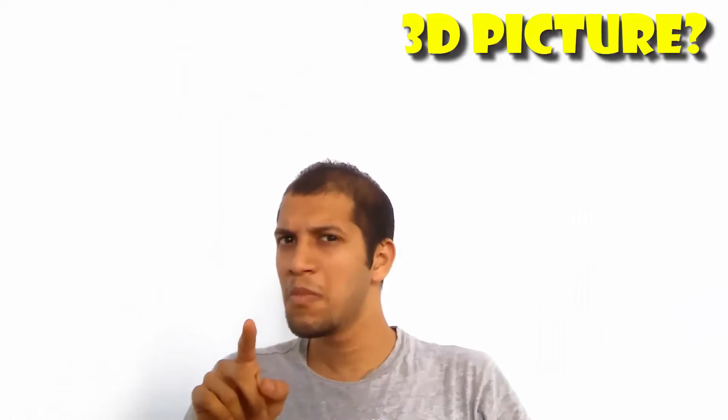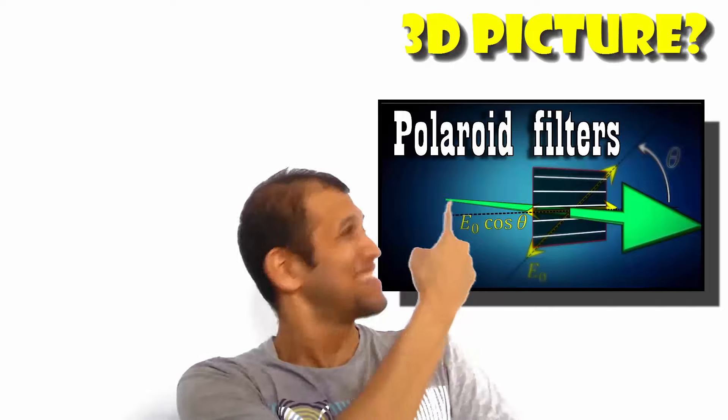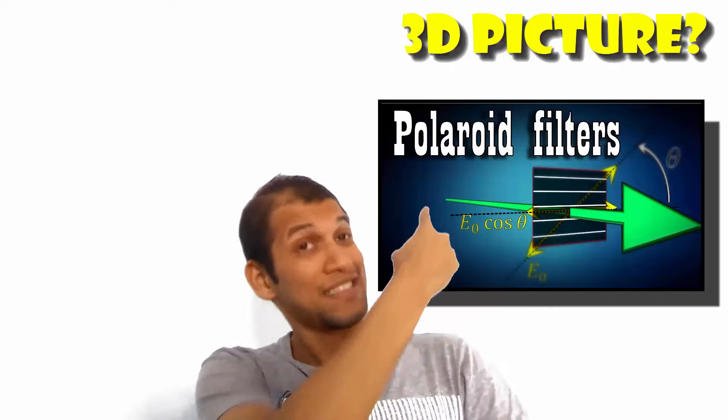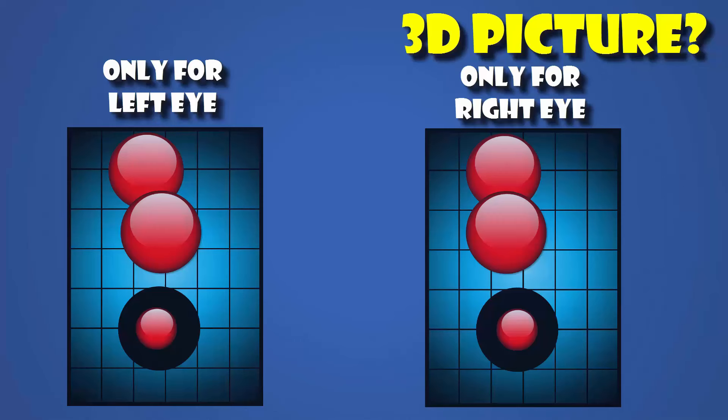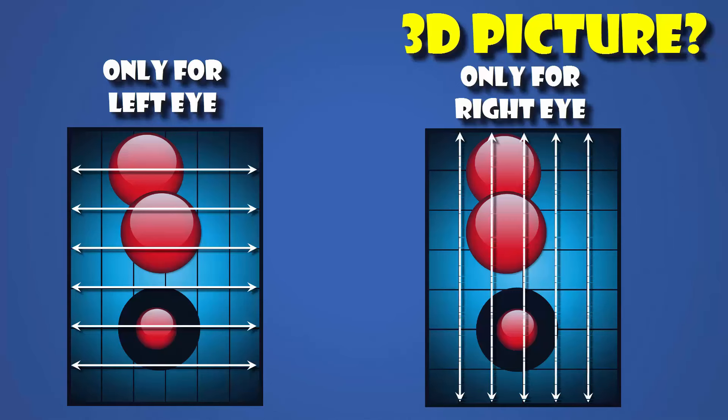One method is using Polaroid filters, which you can learn about in detail here. So what we can do is, we could make this left picture say horizontally polarized shown with horizontal arrow marks and the right one vertically polarized.